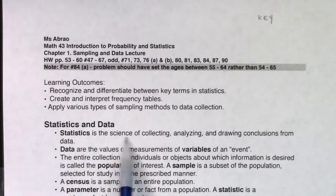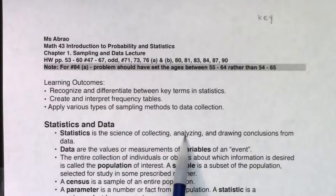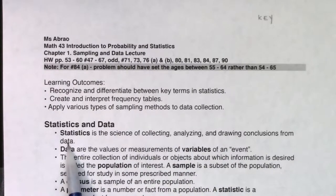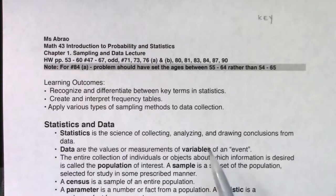So let's get some vocab down. Statistics is the science of collecting, analyzing, and drawing conclusions from data, and then that leads to our next vocab term. Data, they're the values or measurements of variables of an event. And this idea here, variables, you're going to hear me say this the entire semester. Every time you read a problem, start to identify what is the variable in this problem. What is varying amongst my sample?